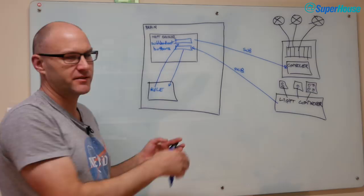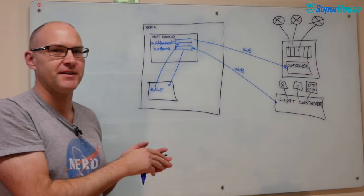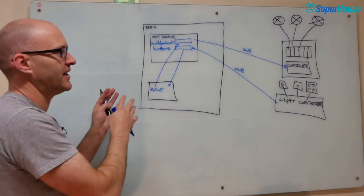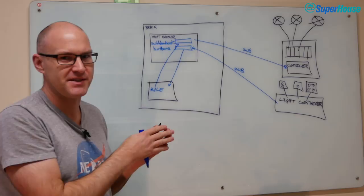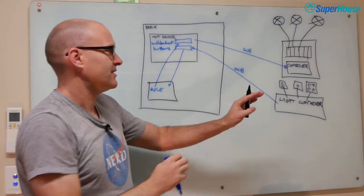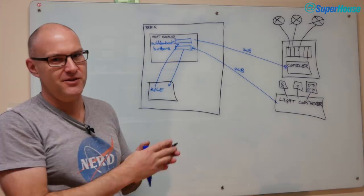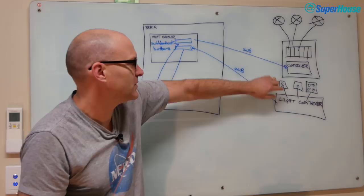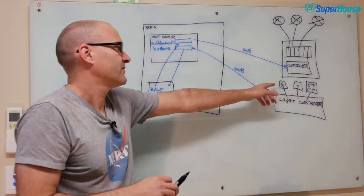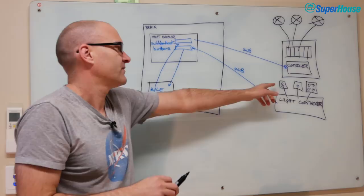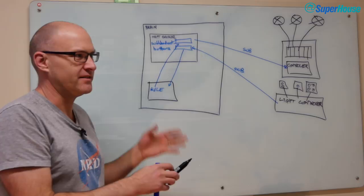By defining linkages between inputs and outputs through software, you have a lot of flexibility. The control over the outputs is disconnected from the inputs except through software. That means you can simply reconfigure your software to totally change the behavior. If you want a light switch to do something different, there is no physical connection between that switch and the lights it controls - all you have to do is update your rules. You could say: that button on the wall, I don't want it to do the exhaust fan in the kitchen anymore, I want it to do the under-bench lighting. Change a couple of entries in your configuration, and the light switch does something totally different.